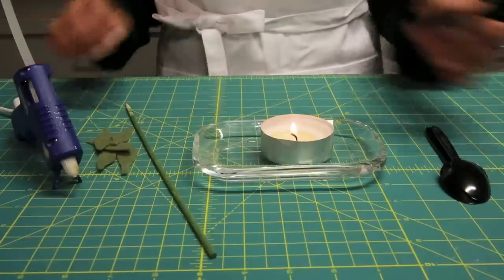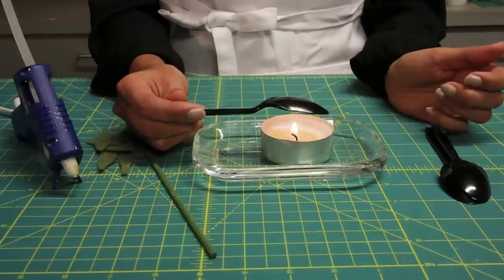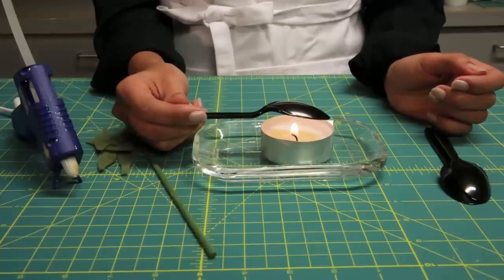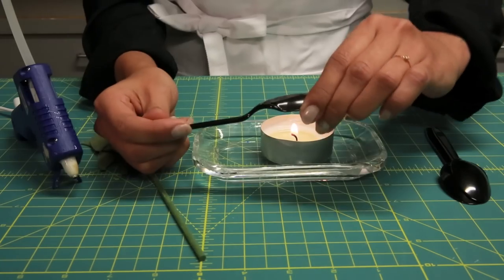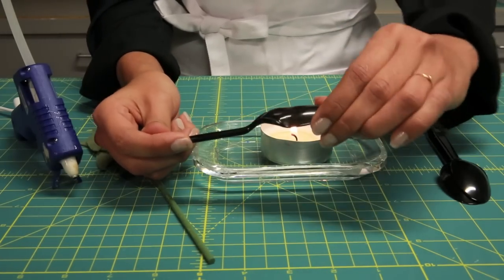For your first spoon, you're going to hold it upside down on the flame, and this is going to be the center of the flower. And so as it starts melting, you just squeeze the sides together.